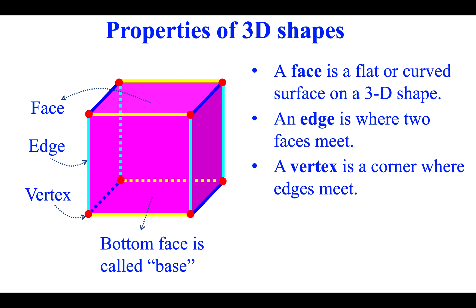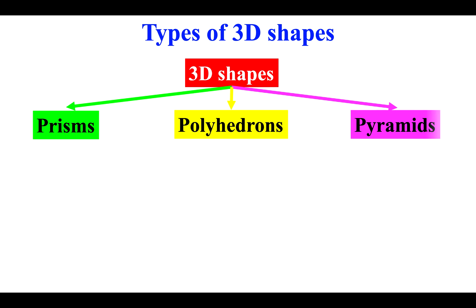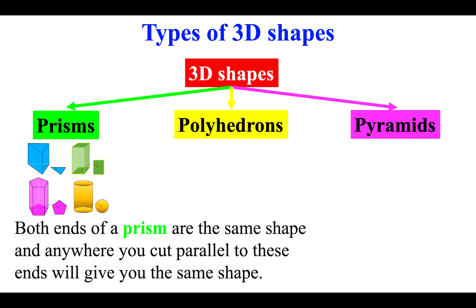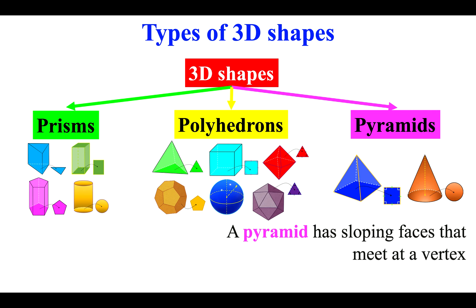There are three types of 3D shapes: prisms, polyhedrons, and pyramids. Both ends of a prism are the same shape and anywhere you cut parallel to these ends will give you the same shape. A polyhedron is a three-dimensional shape with polygonal faces. A pyramid has sloping faces that meet at a vertex.